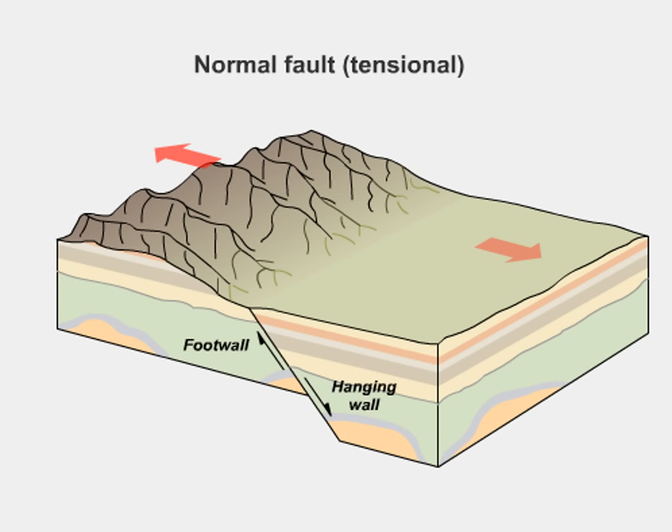Many landforms can develop from normal faulting, including tilted fault block mountains, down-dropped basins known as grabens, and uplifted mountain blocks called horsts. Select figure one to see a diagram illustrating the formation of the Sierra Nevada, a tilted fault block mountain range. Select figure two to see a diagram showing a graben and a horst.